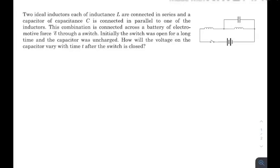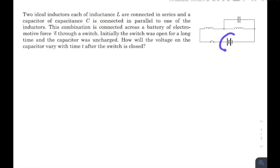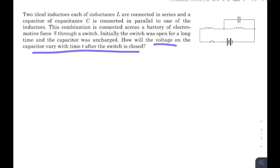What is up everyone, I hope all of you are doing great. Today I have a question from the chapter of electromagnetic induction. There are two identical inductors connected in series, and there is a capacitance C connected in parallel with one of the inductors. There is a battery of EMF E connected via a switch. Initially the capacitor was uncharged, and after connecting the switch we need to find out the voltage across the capacitor at any time t.